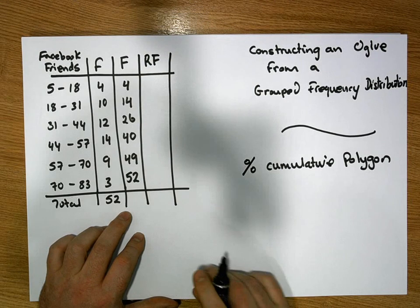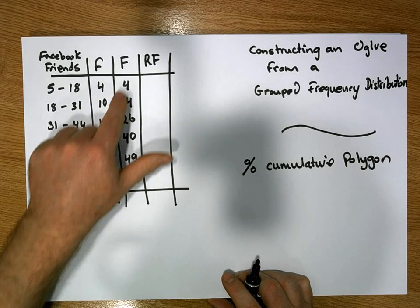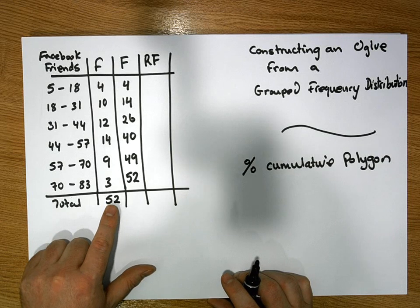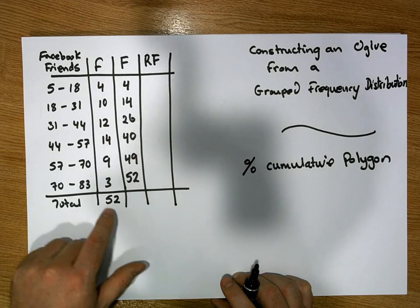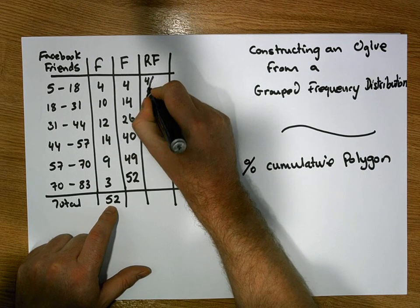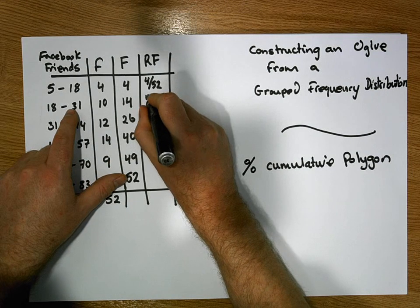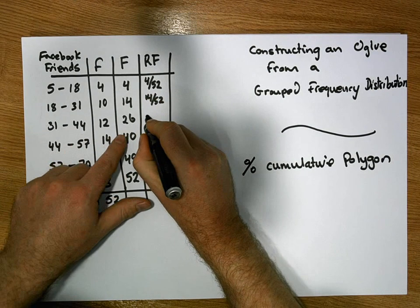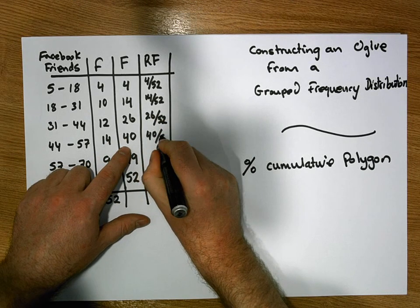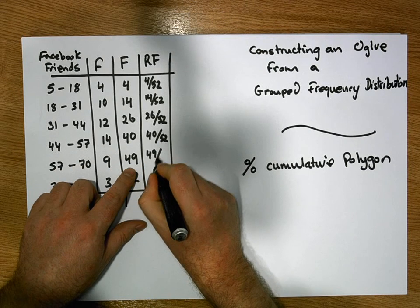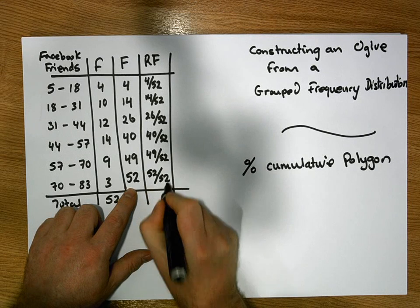And the relative cumulative frequencies are simply the proportion of observations that are less than the upper bounds. The proportion relative to the total number of observations. So what we can see is that 4 observations were less than 18. Well that represents 4 of the 52 observations, or 4/52. 14 were less than 21, so that's 14/52. 26 were less than 44, so that's 26 of the 52 observations. This represents 40 of the 52 observations. 49 of the 52 observations. And finally 52 of the 52 observations were less than 83.